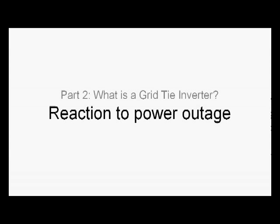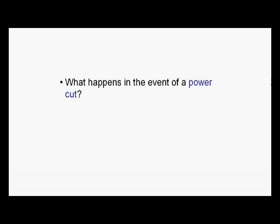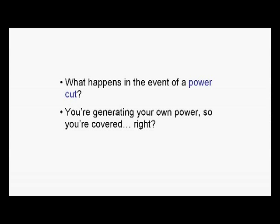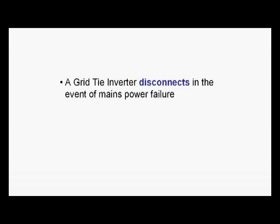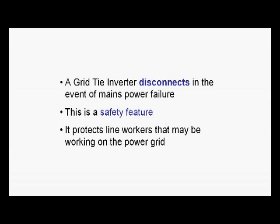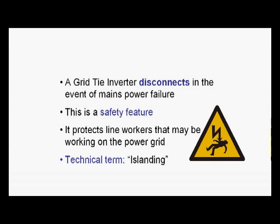Let's talk about the reaction to a power outage — what happens in the event of a power cut. You might think that since you're generating your own power from your solar panel or wind turbine, you're covered. Wrong. A grid tie inverter actually disconnects in the event of a mains power failure, so even if the sun is shining on your solar panels or the wind is blowing on your wind turbines, your grid tie inverter will not produce an output if it doesn't detect mains power. This is a safety feature that protects line workers who might be working on the power grid — the technical term for it is islanding. Your power company will be more than keen to ensure that any grid tie device you use has this feature.